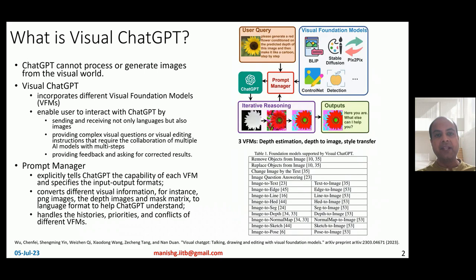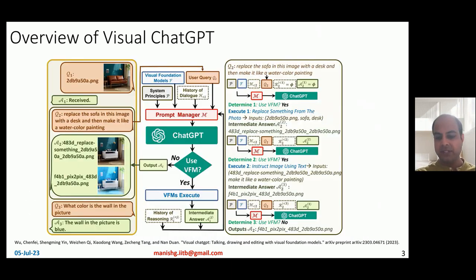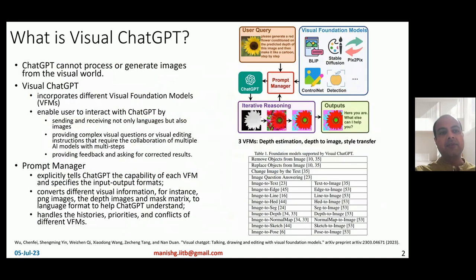What is Visual ChatGPT? Well, as all of us understand, ChatGPT cannot process or generate images from the visual world. It can only process text, and therefore we need what is called Visual ChatGPT. It is a system which incorporates different visual foundation models.